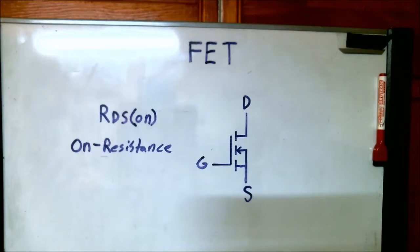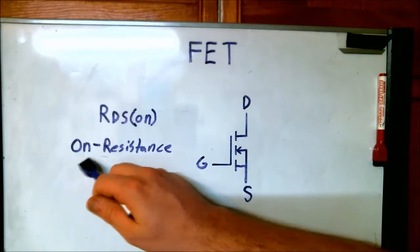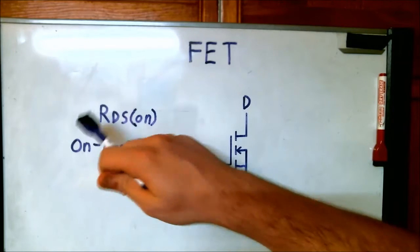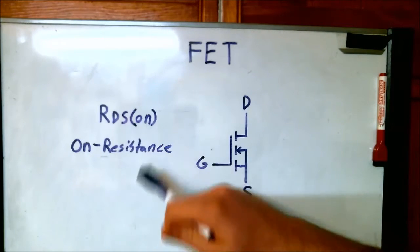Hi everyone. This video is exclusively about a parameter of a FET. The parameter is the ON resistance, notated in the datasheet as RDS(ON).